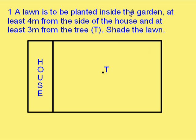a lawn is to be planted inside this garden at least four metres from the side of the house, so it's four metres away from the house, and at least three metres from the tree. Shade the lawn.